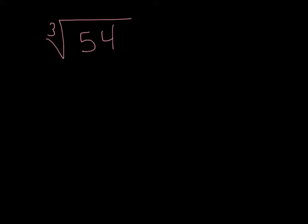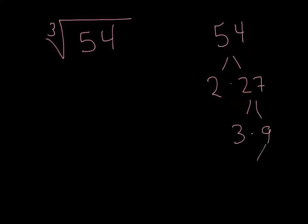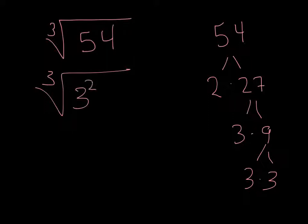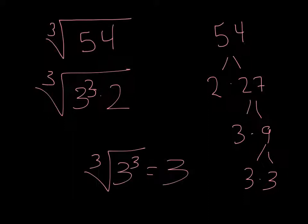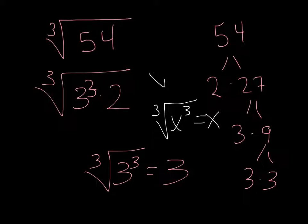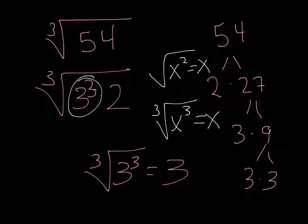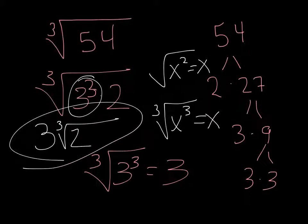Let's simplify the cube root of 54. A good method is to find the prime factorization: 54 breaks into 2 and 27, and 27 is 3 times 9, which is 3 times 3. So this is the cube root of 3 cubed times 2. The cube root of 3 cubed is just 3, similar to how the square root of x squared is x. So we pull out the 3 and are left with 3 times the cube root of 2.